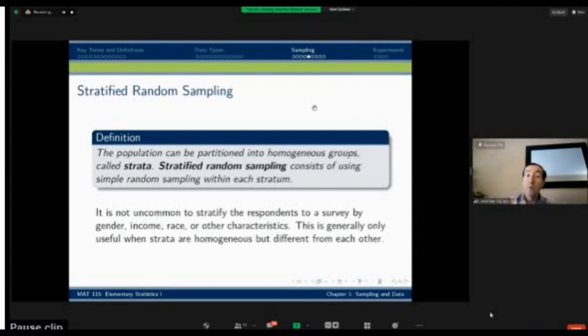Each of those groups is called strata or a stratum. An individual one would be stratum, and the groups overall are called strata. Stratified random sampling is using that simple random sampling within each stratum. So what I might do is I might stratify the survey that I'm looking at by a number of characteristics. I might separate people into different groups by those characteristics, and then choose a simple random sample within each group.